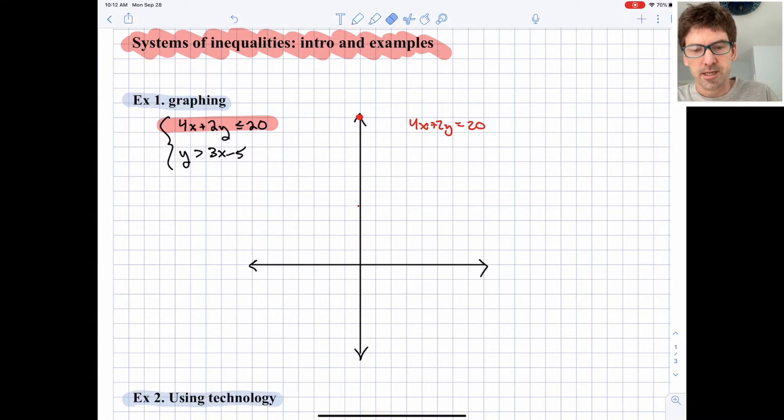Secondly, let's imagine that y is 0, and so that term would disappear. x would be 5. That's 1, 2, 3, 4, 5. We can then simply connect those two points. Let's try to make a nice neat line there. That would be the boundary line.